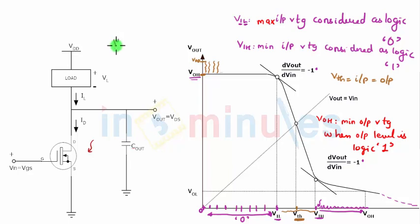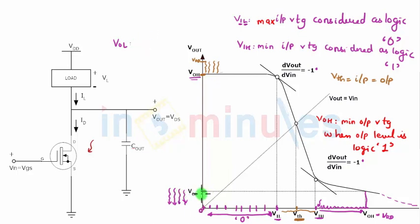Similarly, VOL. Technically, when your input is equal to a high value or VDD, you want your output to go to 0, but it might not go to 0 — it can be some value higher than 0. There is scope to go down and reach 0, depending on what type of loads you use, which we will study in further clips. So VOL is the maximum output voltage when your output level is logic 0. It cannot go above this. VOH was minimum because there was scope to go above and reach VDD; VOL is maximum because there is scope to go down and reach 0.